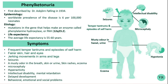Genetic testing confirms the diagnosis of Phenylketonuria by identifying mutations in the Phenylalanine hydroxylase gene, which is responsible for producing the enzyme. In many countries,